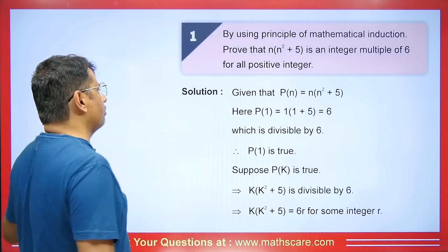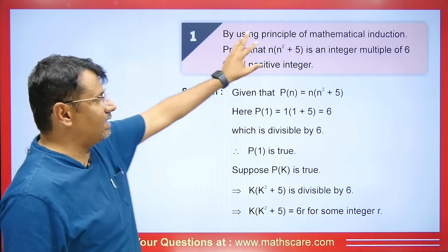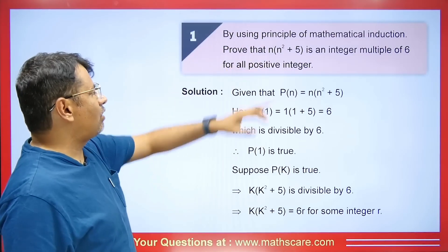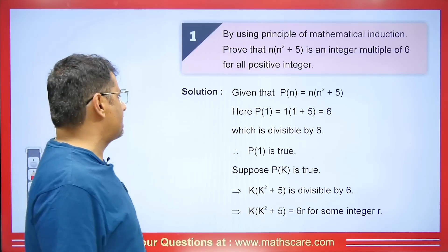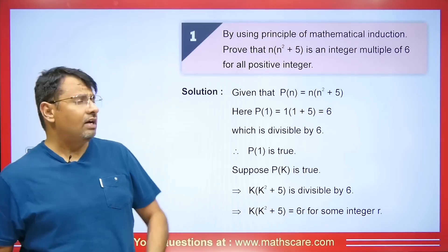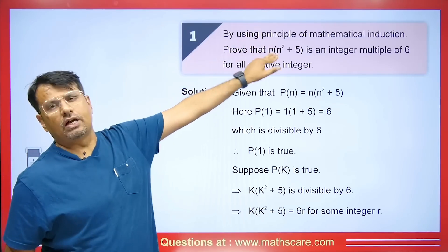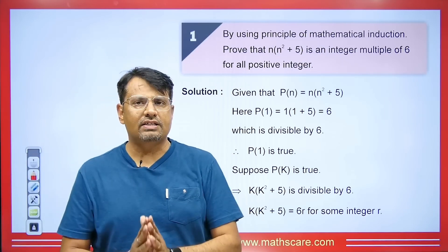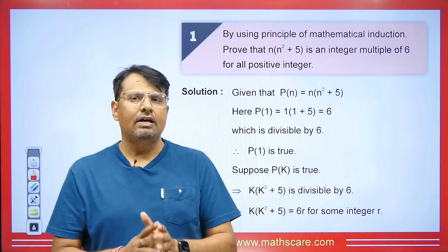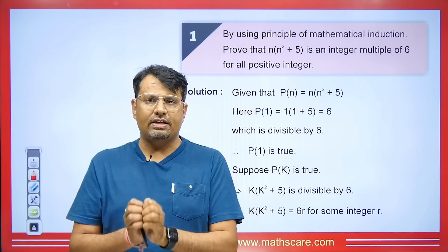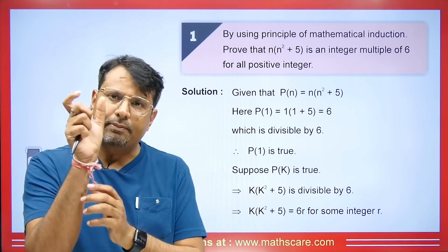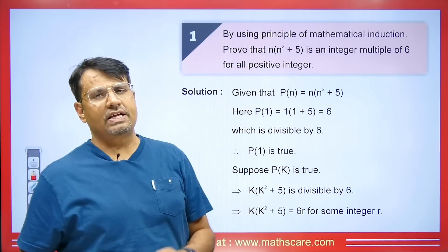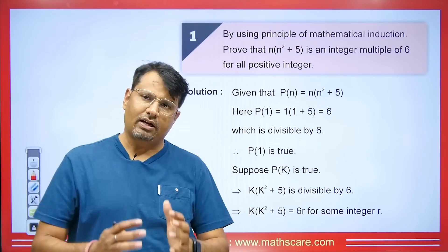Let us take a question and try to understand it. The question is: by using Mathematical Induction, prove that n(n²+5) is an integer multiple of 6 for all positive integers. You are being told that when you put any value of n, it will ultimately be divisible by 6. Any number divisible by 6 means it will be a multiple of 6 — the point is the same.